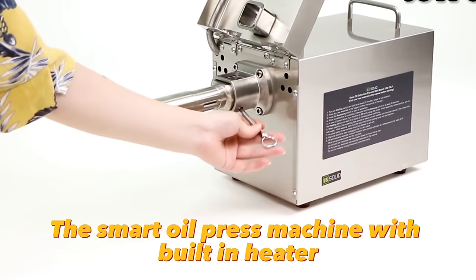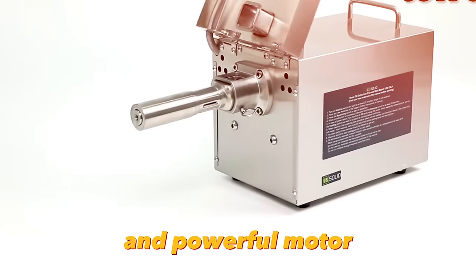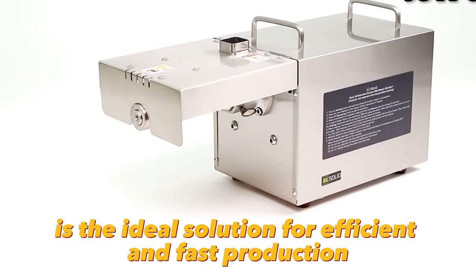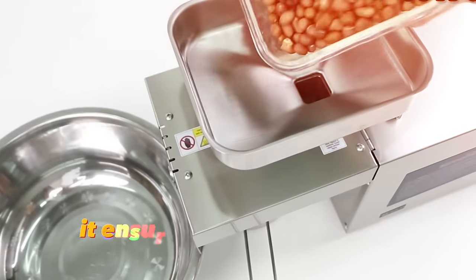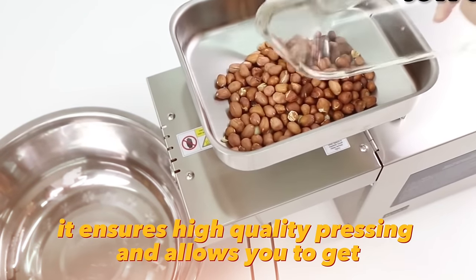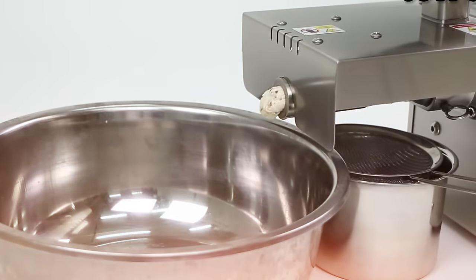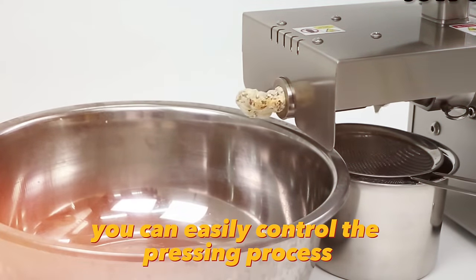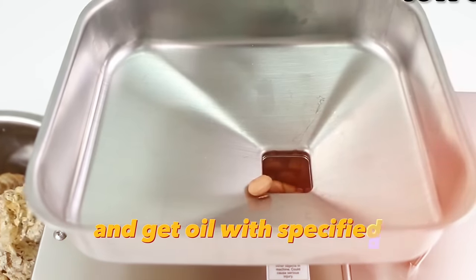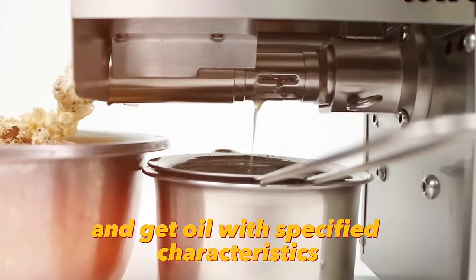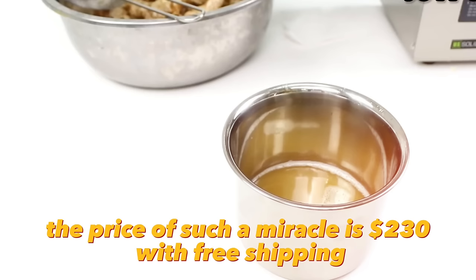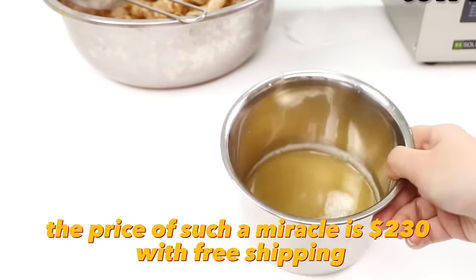The smart oil press machine with built-in heater and powerful motor is the ideal solution for efficient and fast production. It ensures high-quality pressing and allows you to get the maximum amount of oil from the raw material. Thanks to automatic temperature control, you can easily control the pressing process and get oil with specified characteristics. The price of such a miracle is $230 with free shipping.